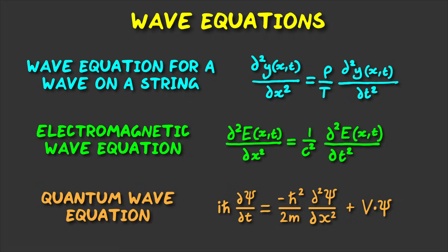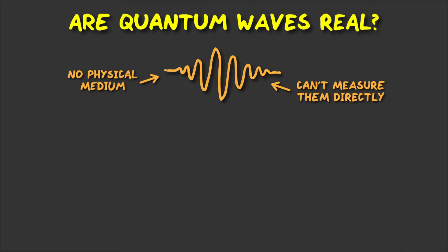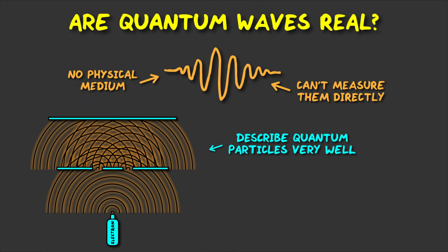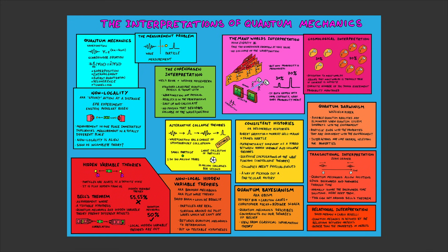But the key difference between all of these waves is that the quantum wave function isn't a real physical wave — there is no medium like water or electromagnetic field that's wobbling. So we can't say that quantum waves are real with our current knowledge because we can't measure them directly. But they do describe the behaviours of quantum particles very well, so there must be something real going on. The question of whether the wave function is real or not is a big question veering into the interpretations of quantum mechanics, so I'll just refer you to my previous video on that subject.